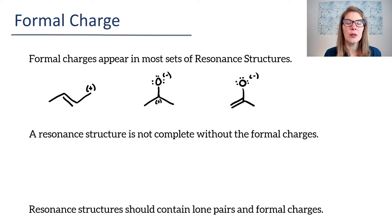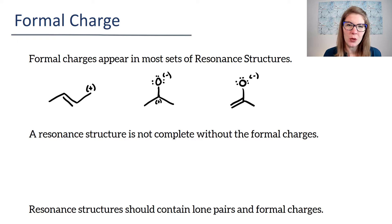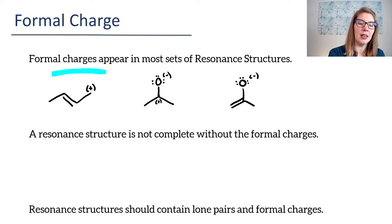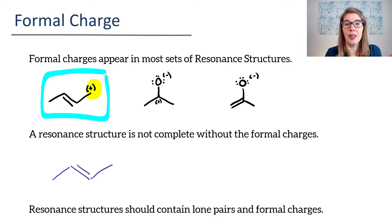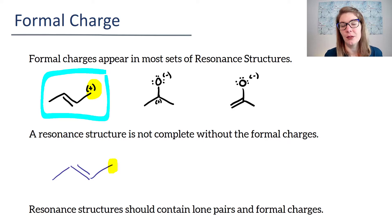Here are some examples of ways you've already seen resonance structures that have formal charge. You really do need to include the resonance structures with formal charges, because if you leave off the formal charge, sometimes you accidentally draw a completely different compound. For example, if I take this first one right here and redraw it without that positive formal charge, I've completely changed the structure because the carbon at the end, which only had three bonds up there, now has four bonds — a different number of hydrogens and a different structure.